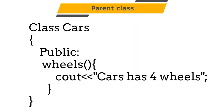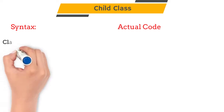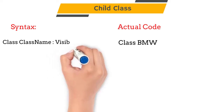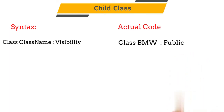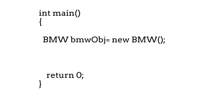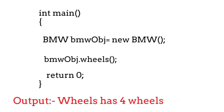Now let's see the syntax. First, we will define a class Cars which has the wheels method. While defining a child class, we have to tell the C++ compiler that this is a child class. First comes a keyword, then the name of the class — BMW in our case. Then we use the assignment operator, followed by the visibility which can be public or private, and then the name of the parent class we are inheriting from. The rest of the class code, like member variables such as model number and functions such as print model number, will stay as it is. Now, let's create an object of the BMW class in the main method. We have not defined the wheels method in our BMW class, but if we call that wheels method using the BMW class object, we will get the output 'Cars has 4 wheels.' In this way, we can reuse the code of the parent class using inheritance.